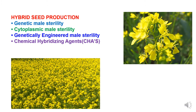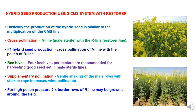In rapeseed and mustard, there are four methods used for hybrid seed production: using the genetic male sterility system, using the cytoplasmic male sterility system, genetically engineered male sterility system, and chemical hybridizing agents. Here we will discuss broadly about the cytoplasmic male sterility hybrid seed production system, focusing on hybrid seed production techniques using the CMS line — cytoplasmic male sterility system.